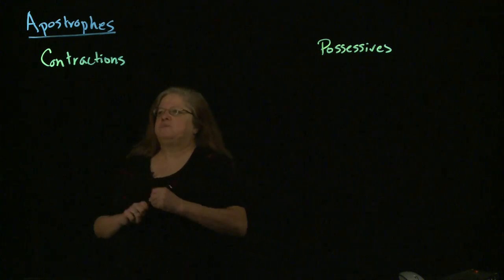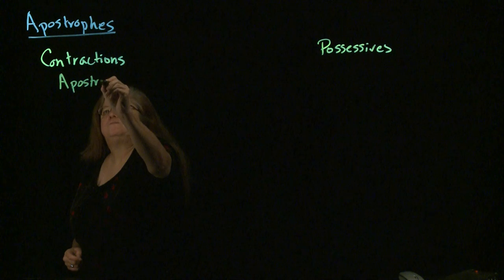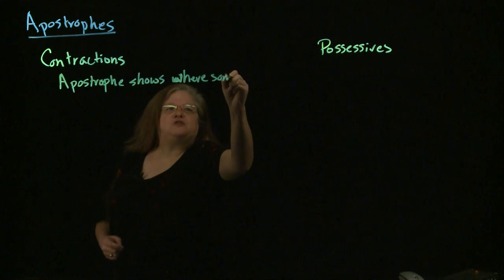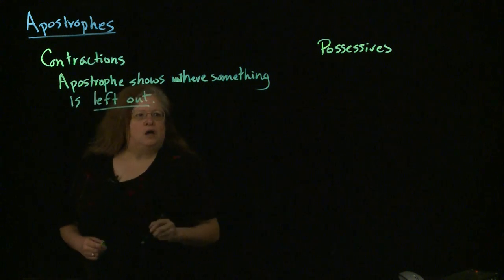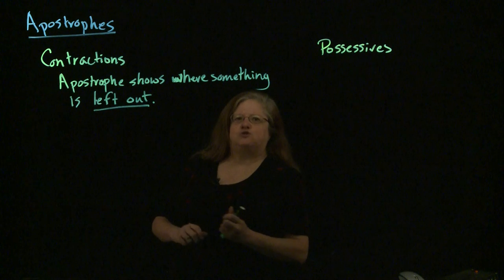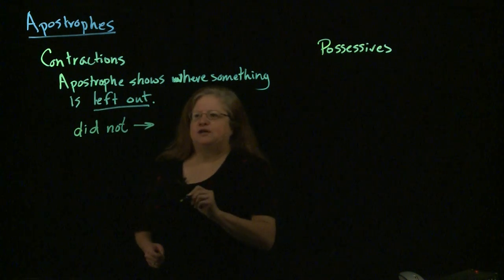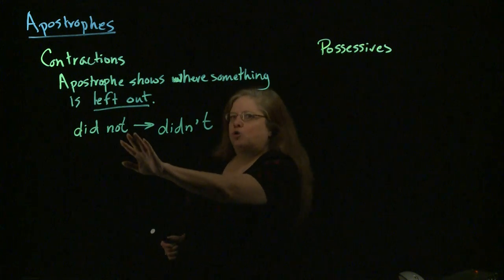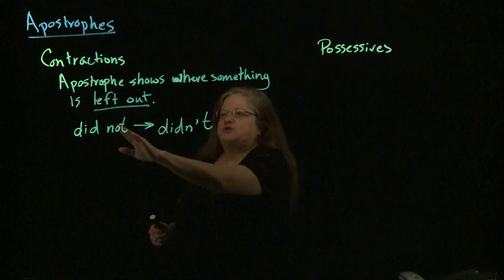So let's start by looking at contractions. A contraction is simply when you've shortened something and left some pieces out. The apostrophe is going to show where something has been left out. So if you're making a contraction, figure out where something's been left out — that's where the apostrophe goes. For example, if we have 'did not' and make that into a contraction, it will be 'didn't,' D-I-D-N apostrophe T. This apostrophe is showing where that O got left out. A lot of people think the apostrophe goes where the words got stuck together, between the D and the N. That's not true — the apostrophe is showing what's left out.